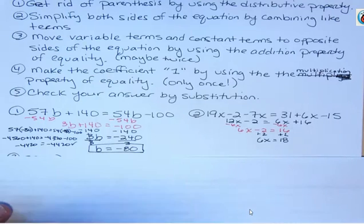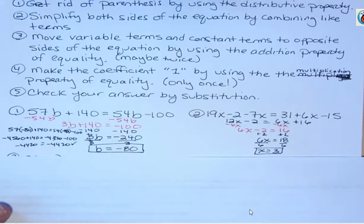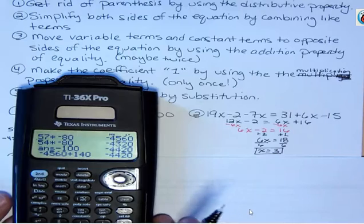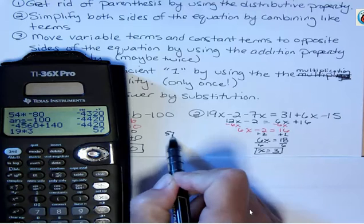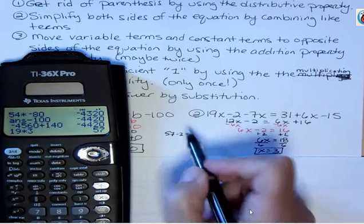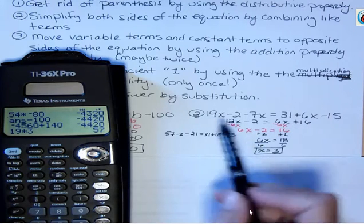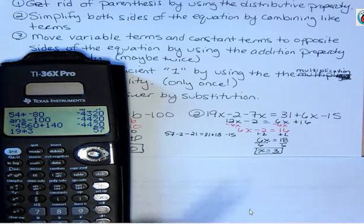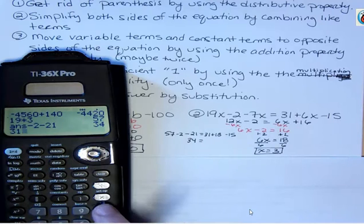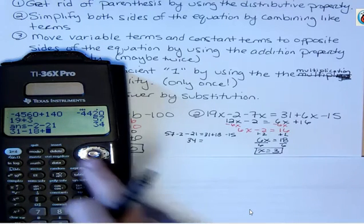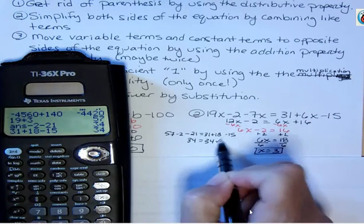The coefficient here is 6, so I'm going to divide both sides by 6 and get x equals 3. To check: 19 times 3 is 57, so I have 57 minus 2 minus 21 — which is 34. On the other side, 31 plus 18 minus 15 is also 34. So I can always substitute back in to check.